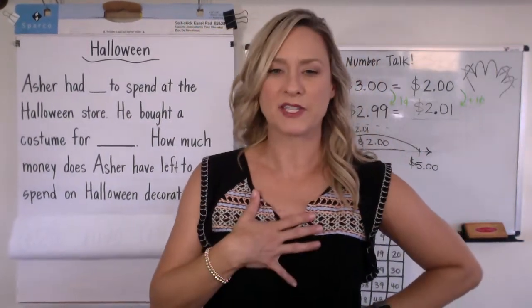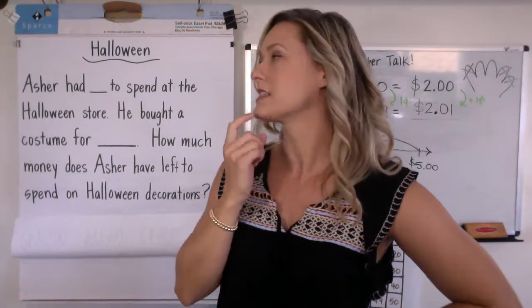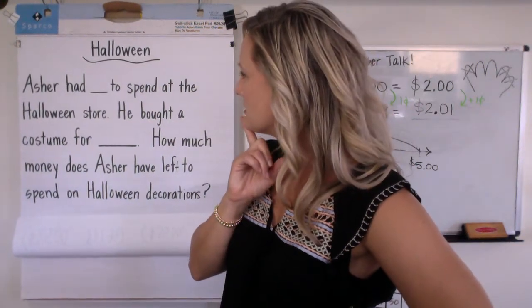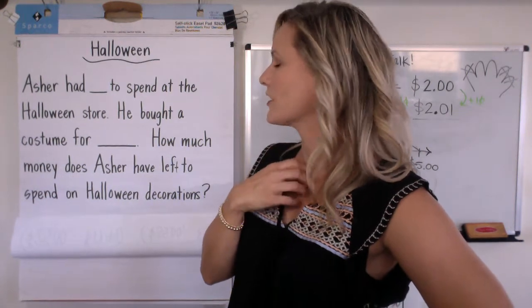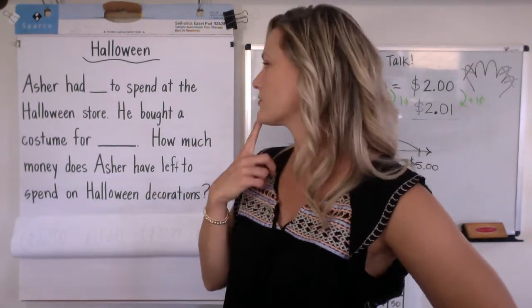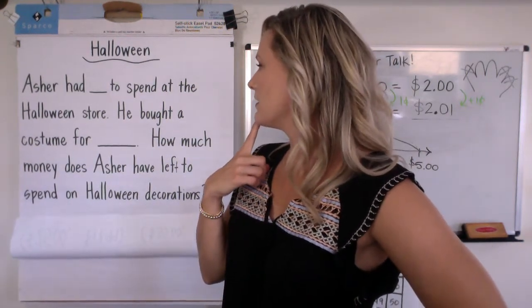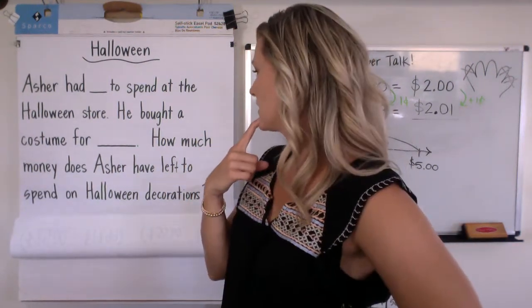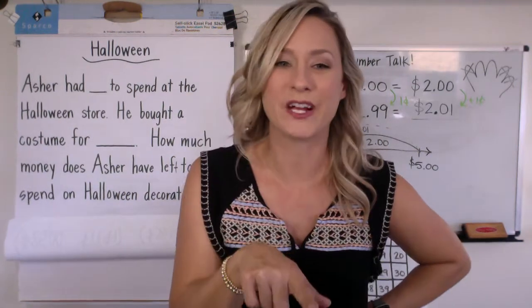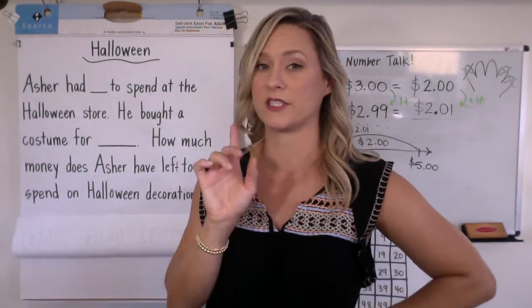Okay, so I don't have the picture of that in my mind yet, so I need to stop it and read it again. Asher had at the Halloween store—okay, he had some money to spend at the Halloween store. He's gonna buy a costume and we're gonna know how much the costume costs, and now we have to figure out how much left he has for the decorations. Okay, so make sure you make the picture in your head. That's like the most important part.